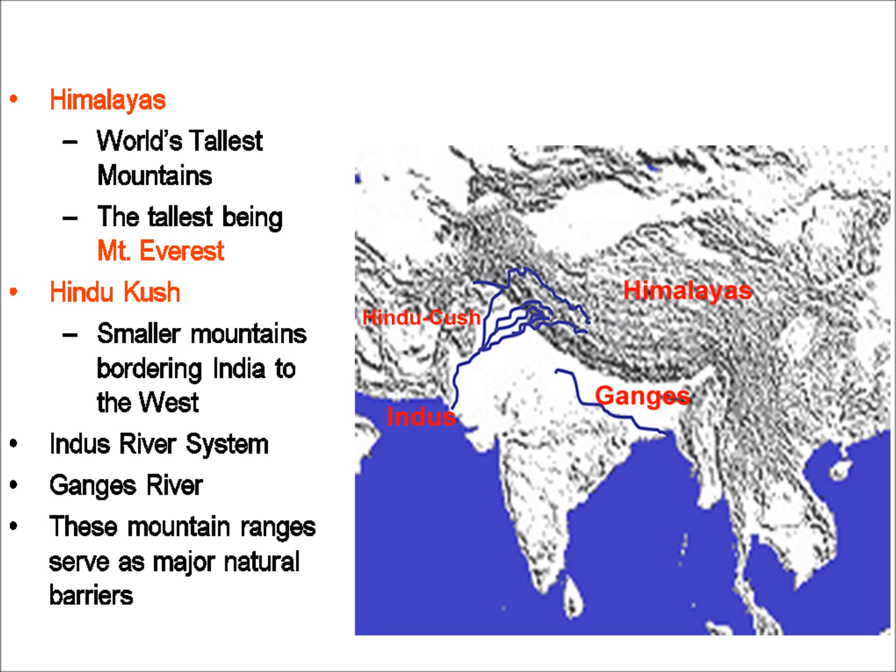To the left or west of the Himalayas, we see the Hindukush. This is a shorter set of mountains that borders India. Through here, we will actually be seeing people gaining access to India, despite the Himalayas forming a very large barrier along the north and east sides.